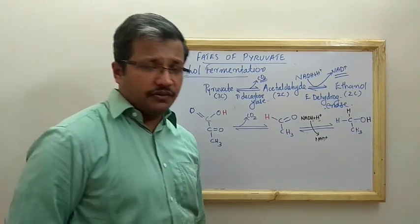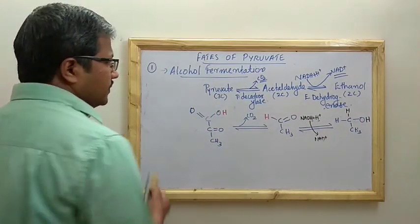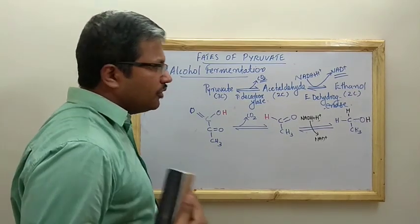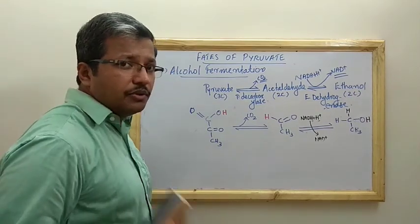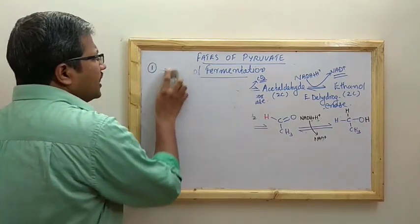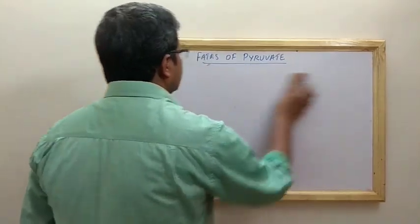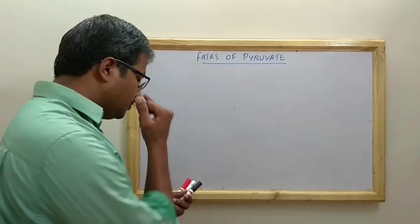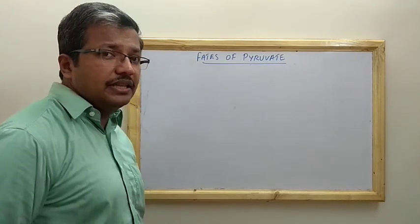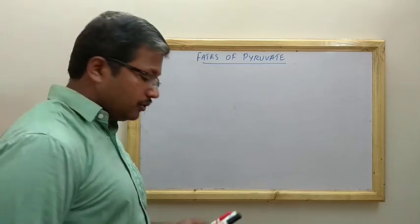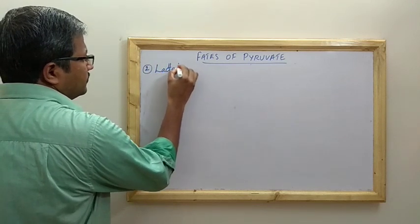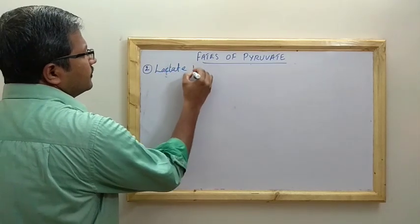Hope you understood the alcohol fermentation fate of pyruvate. Now let us see lactic acid fermentation. Note that acetic acid fermentation — by which you make vinegar — is actually an aerobic metabolism, not a fermentation. The second anaerobic fate is lactate fermentation, also called lactic acid fermentation.